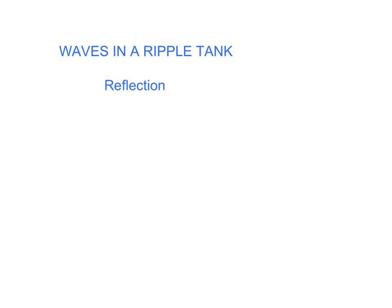Now that we've learned all kinds of things about waves, we're going to investigate waves in a piece of equipment called a ripple tank. We're going to study reflection, refraction, diffraction, and interference.